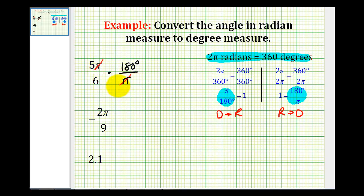The pi simplifies out. Six and 180 have a common factor of six. There's one six in six and thirty sixes in 180. And now we'll multiply. We have five times thirty degrees. That's 150 degrees. And our denominator would be one.